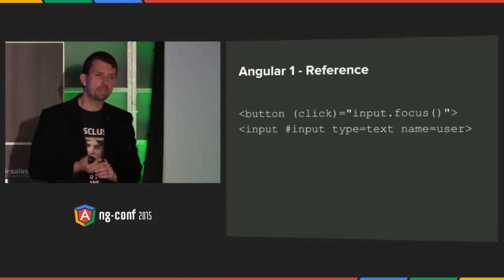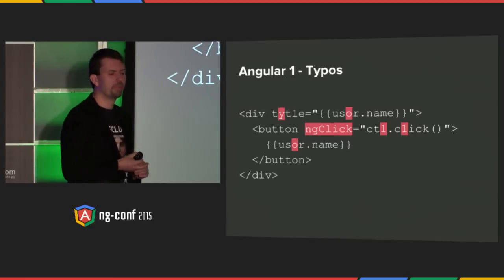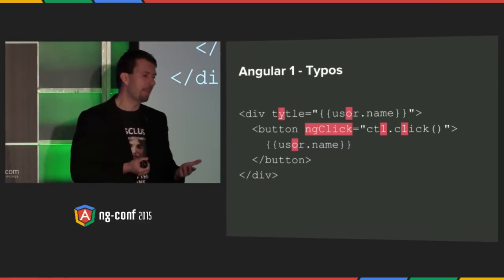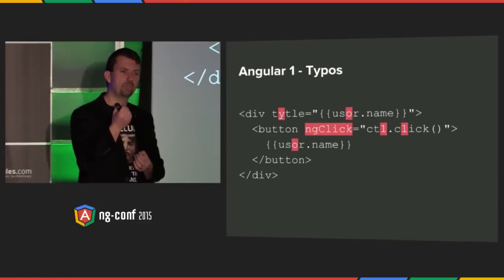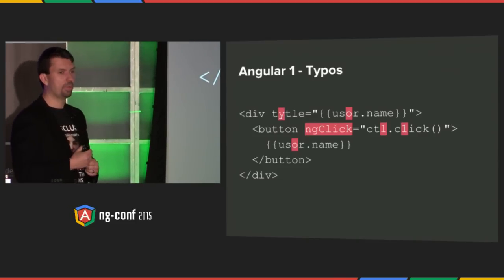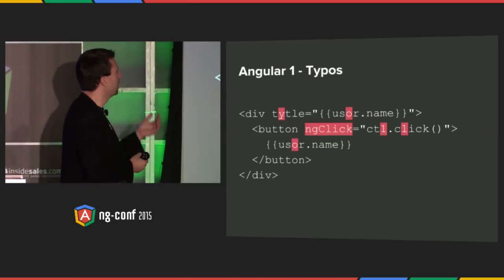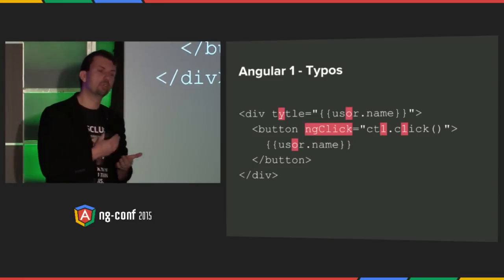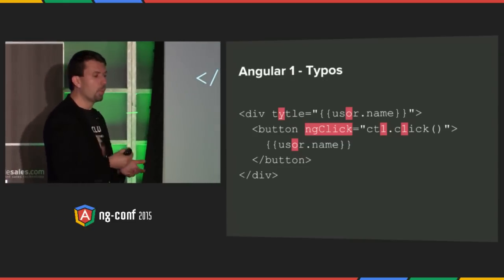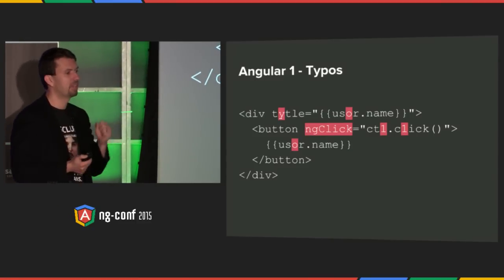An interesting thing happens when you explicitly declare variables — can you spot all the errors in this example? It turns out there are six of them. Inside of Angular 2, because we declare references ahead of time, we can actually catch specific things. We can look at the div and say, hey, there is no property called title spelled with a Y on a div — you probably made a mistake, and we can give you this error immediately. We can look at a mistyped user property and look at the controller and say there's no property called user on the controller. So with these changes, we can give you useful error messages rather than having the application silently not work.